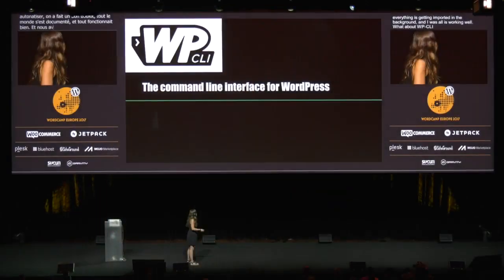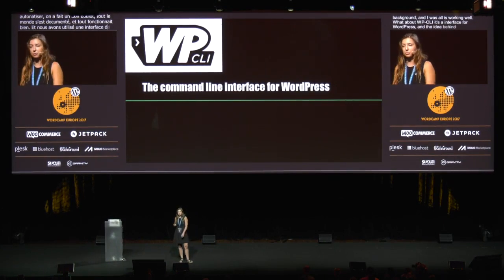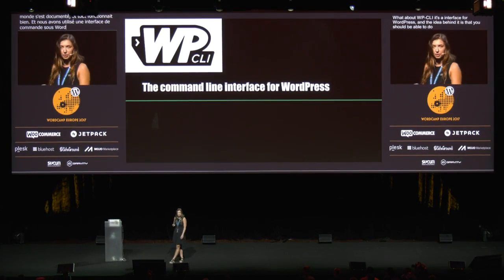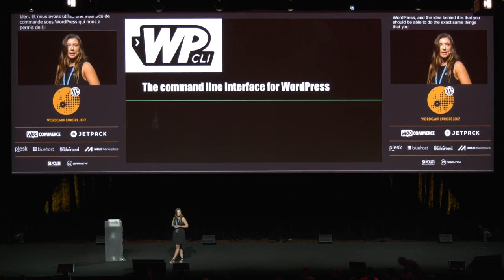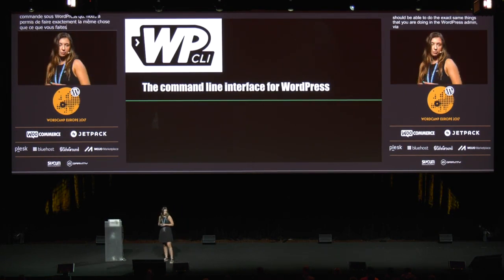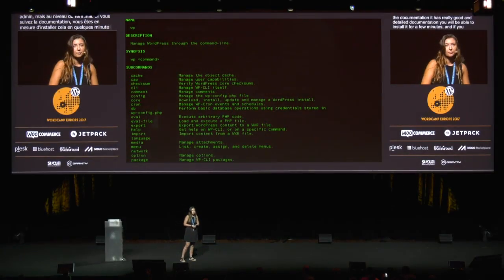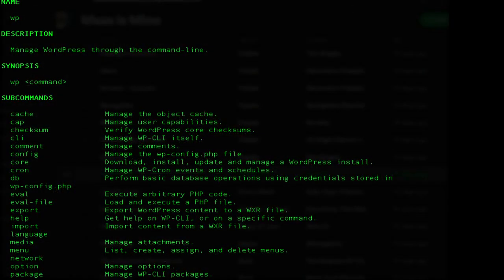What is WP-CLI? It's a command line interface for WordPress. The idea behind it is that you should be able to do the exact same things you do in the WordPress admin via commands in the terminal. It has really good and detailed documentation, and you'll be able to install it in a few minutes.